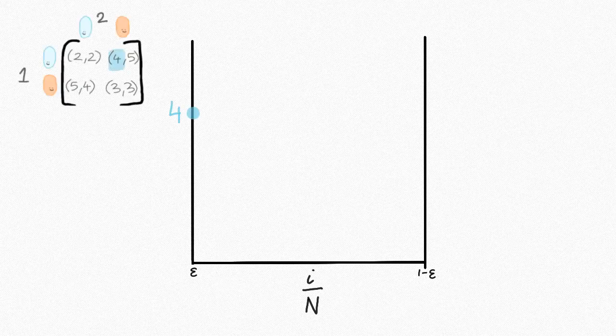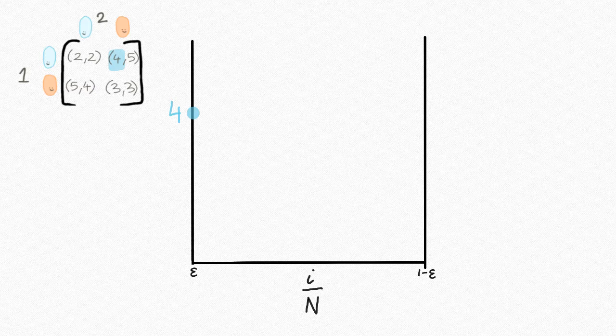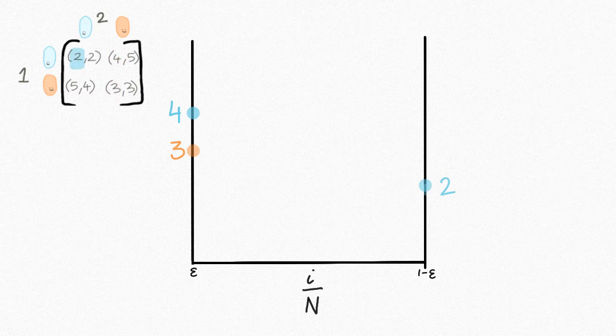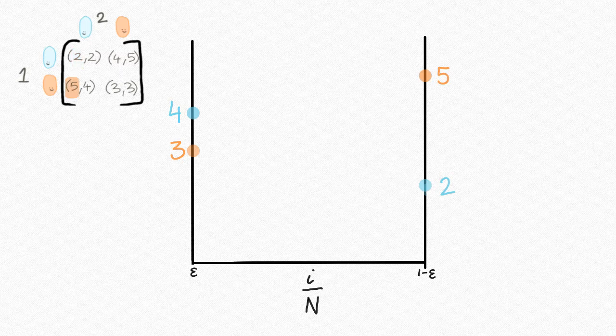When the whole population is orange, a blue will get a payoff of 4, but an orange would get a payoff of 3. When the whole population is blue, blue gets an average payout of 2, but orange gets a payoff of 5.